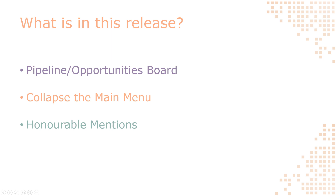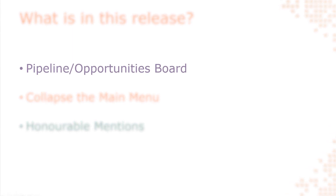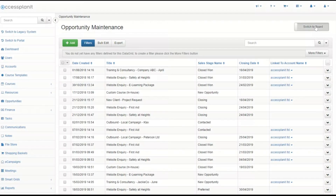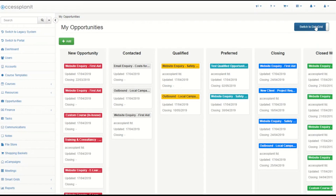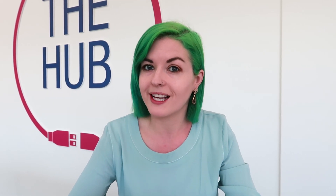We have a bunch of honourable mentions for you in this release, but we'll start with the two bigger updates. The first is your new opportunities board. You can access your opportunities board by toggling the switch to board button at the top right of your opportunities data grid. This new view gives you instant access to the opportunities that you manage by sales stage.